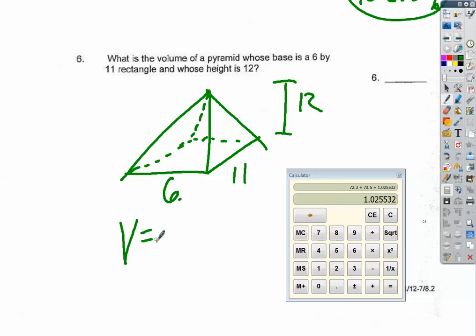You know that volume is area of the base times height, and then in this case, pyramids are divided by three. So six times eleven, sixty-six times height which is twelve, and then divide it by three. There you go.